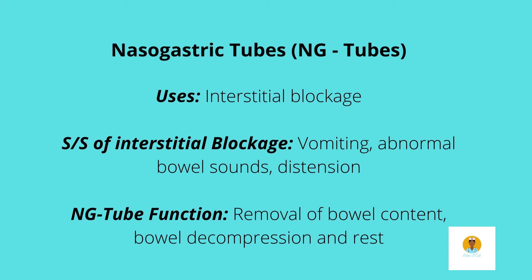Nasogastric tubes, NG tubes for short, are another GI procedure. They are normally placed in a patient who has an intestinal blockage. Signs and symptoms of intestinal blockage include abdominal pain, distension, vomiting, and abnormal bowel sounds. The intention for placing the NG tube is to suction out all the gastric contents and allow the bowel to decompress and rest.